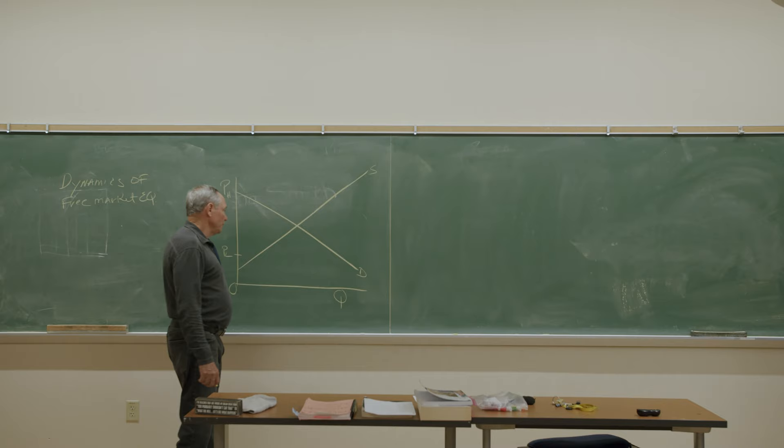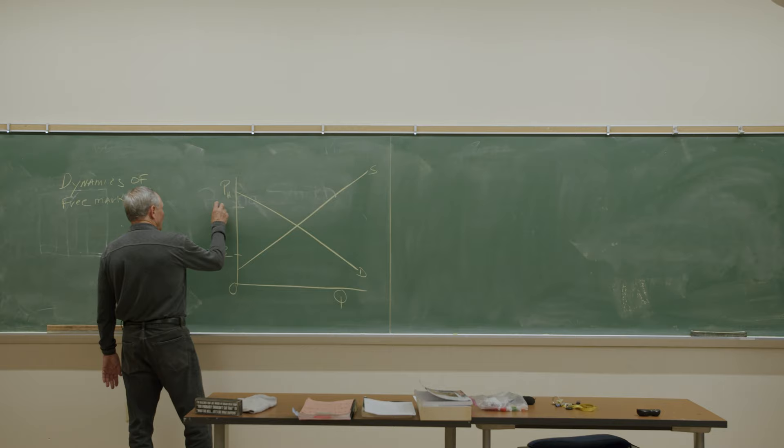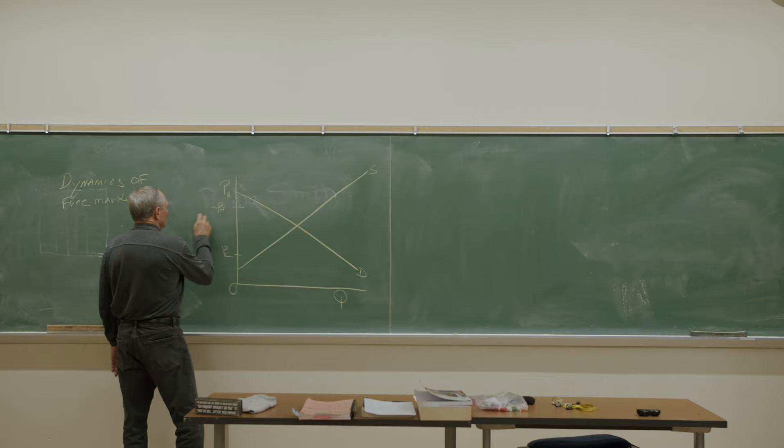Let's assume that for some reason the initial disequilibrium price is high at this amount right here, which we'll put a number at it, we'll say this is $20, and we'll say that's $30.